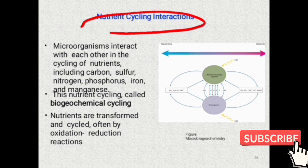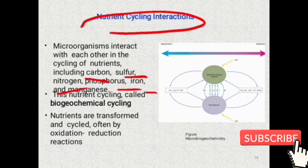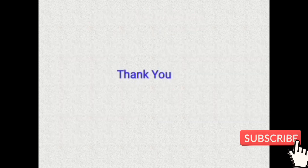The last type is nutrient cycling interactions. In these interactions, biogeochemical cycling occurs in our atmosphere, which is responsible for the cycling of nutrients such as carbon, sulfur, nitrogen, phosphorus, iron, and manganese. There is great benefit from this interaction — nutrients become recycled and the ecosystem becomes stable. Without this, the integrity and ecological sustenance of the microbial community would not be possible.